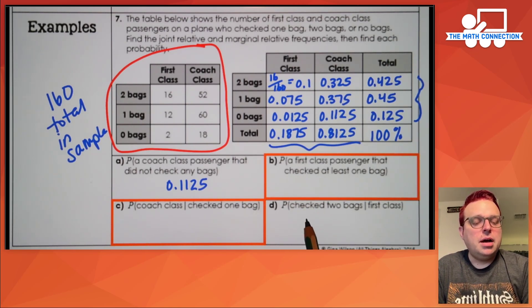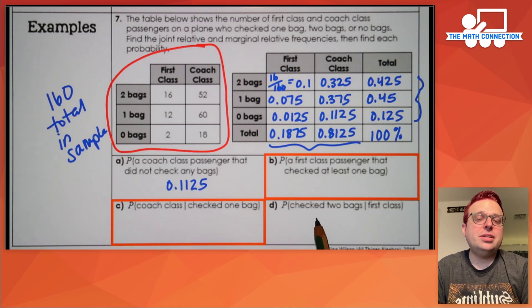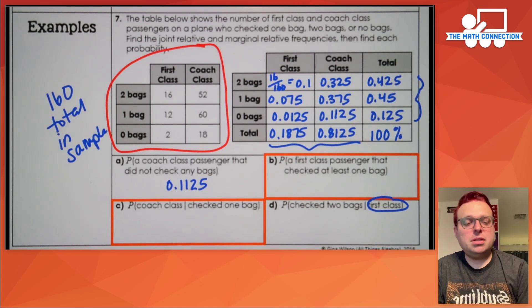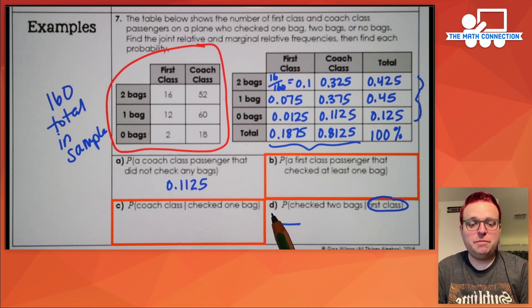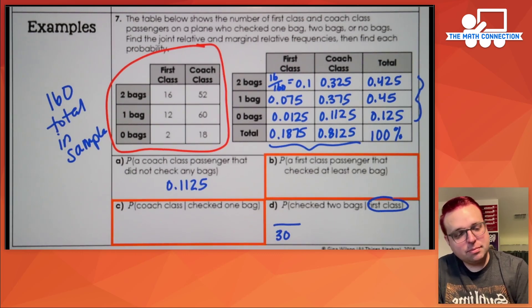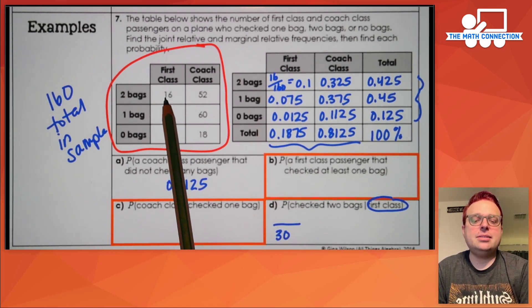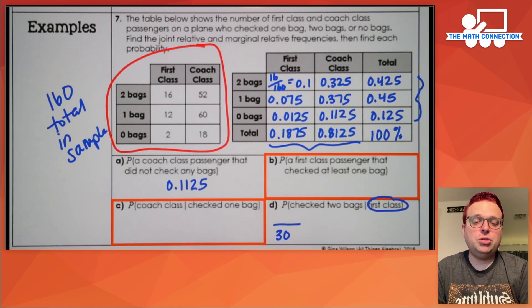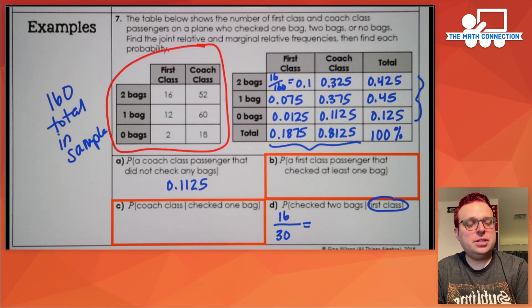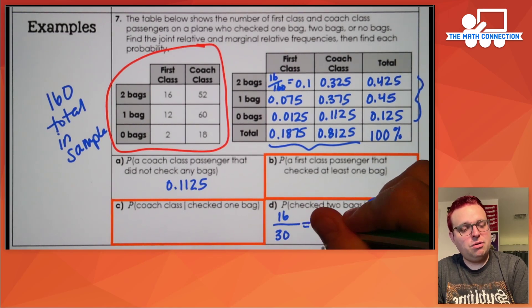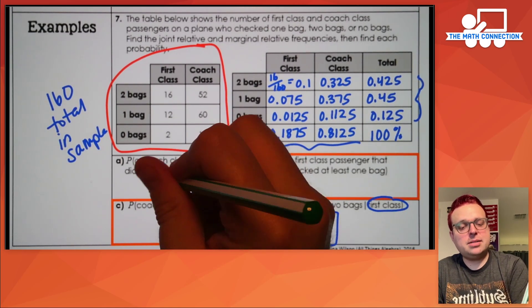Letter D: what's the probability of finding a passenger who checked two bags given that they're in first class? The denominator is the number of people in first class: 14 plus 16 equals 30. For the numerator, how many people checked two bags and are in first class? The joint probability is 16, because our table told us there are 16 passengers with two bags in first class. So 16 over 30 reduces to eight over 15. That's your final answer.